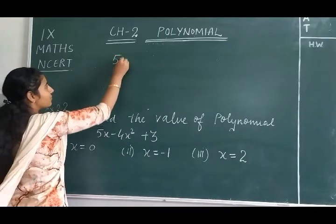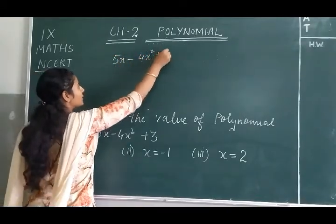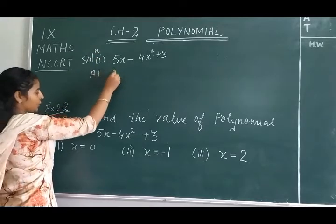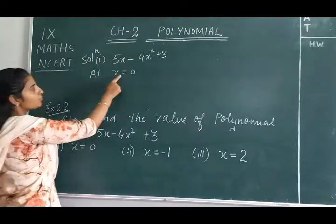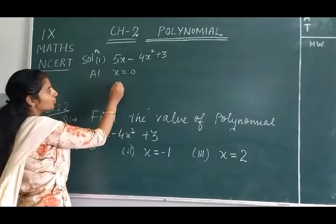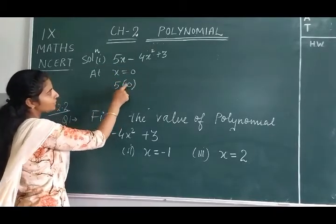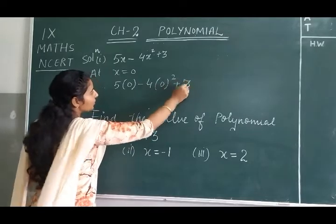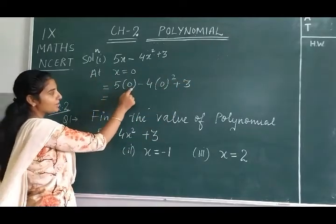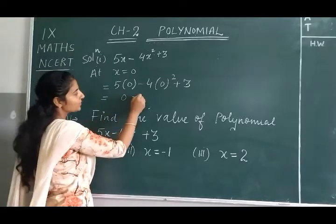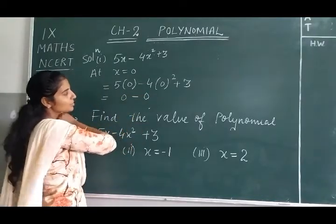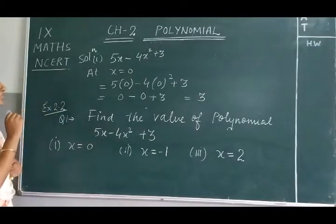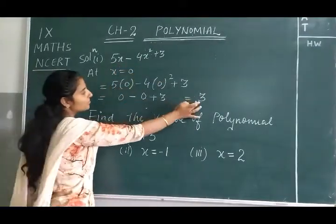The polynomial is 5x minus 4x² plus 3. For the first part, at x = 0, we put the value x = 0. So it becomes 5(0) minus 4(0²) plus 3. Now 5 multiplied by 0 is always 0, and 4 multiplied by 0² is 0, so we are left with plus 3. When we put x = 0, our polynomial value becomes 3.